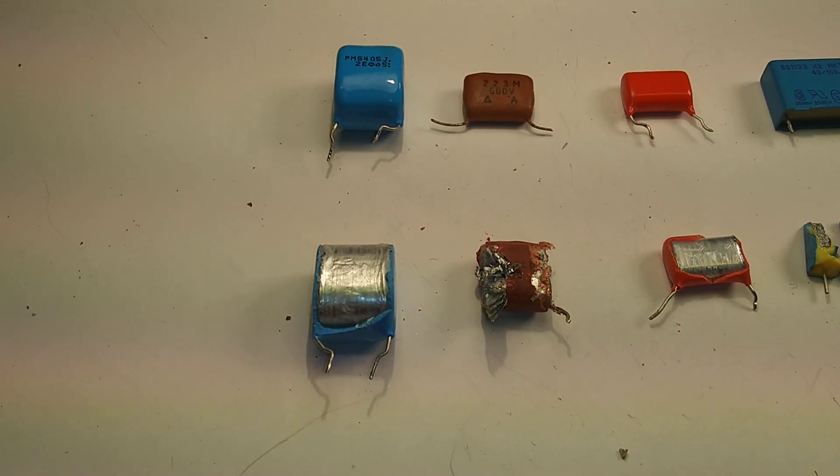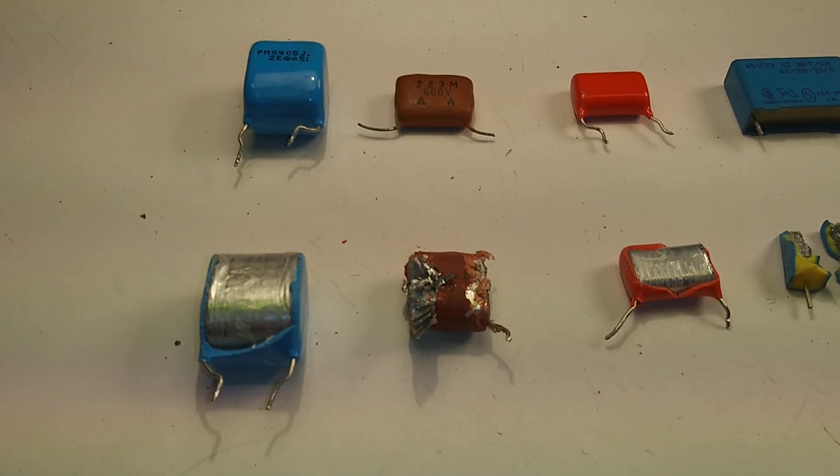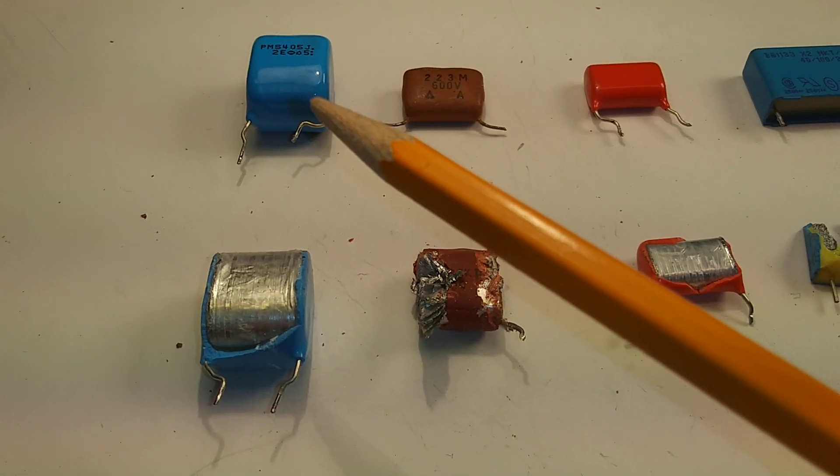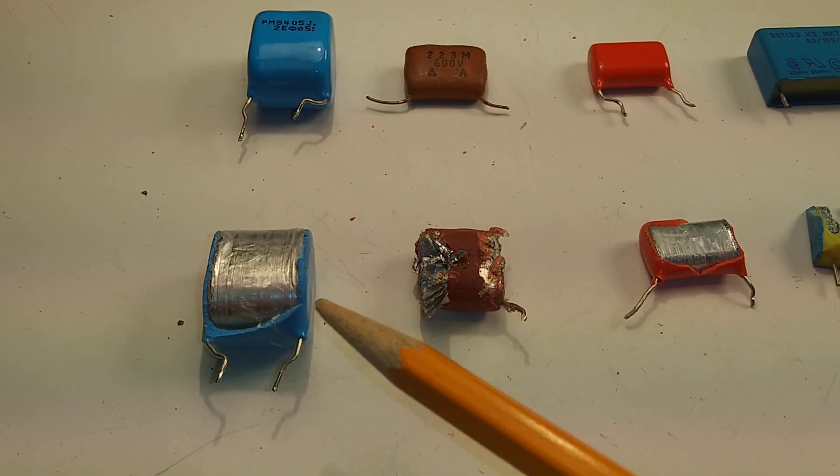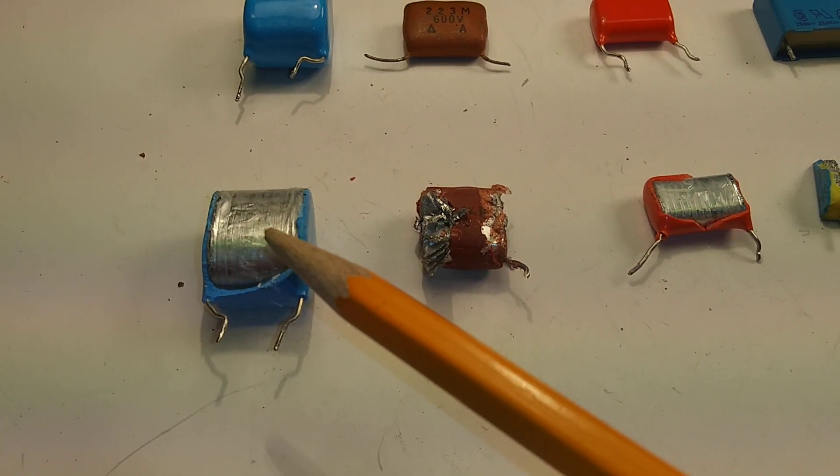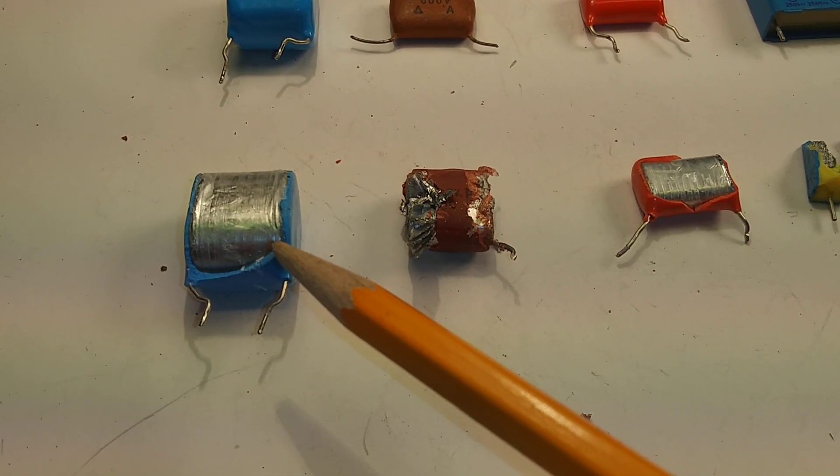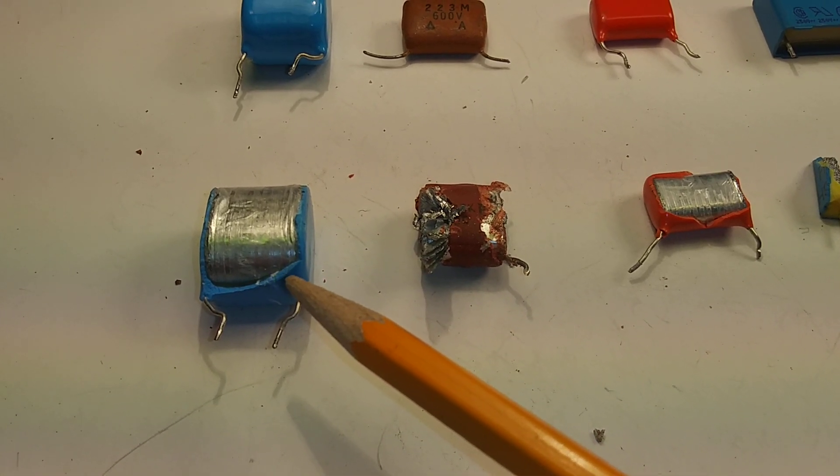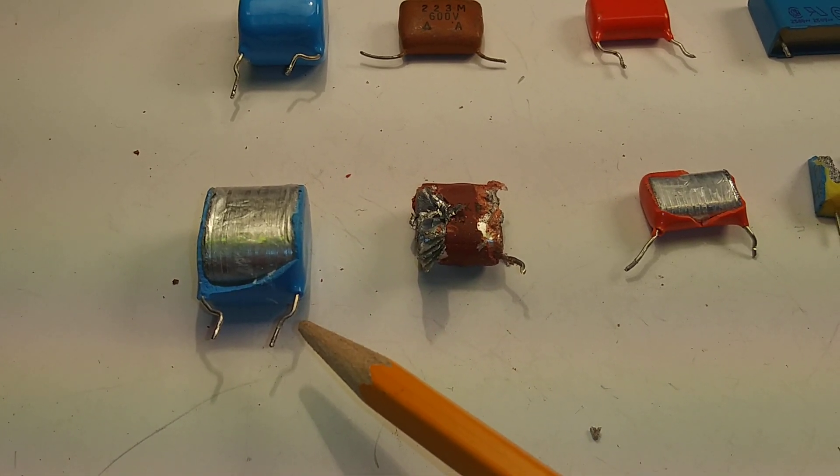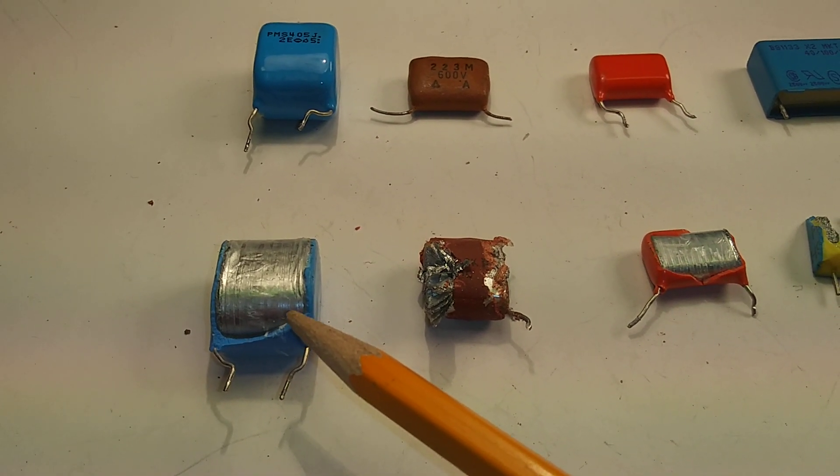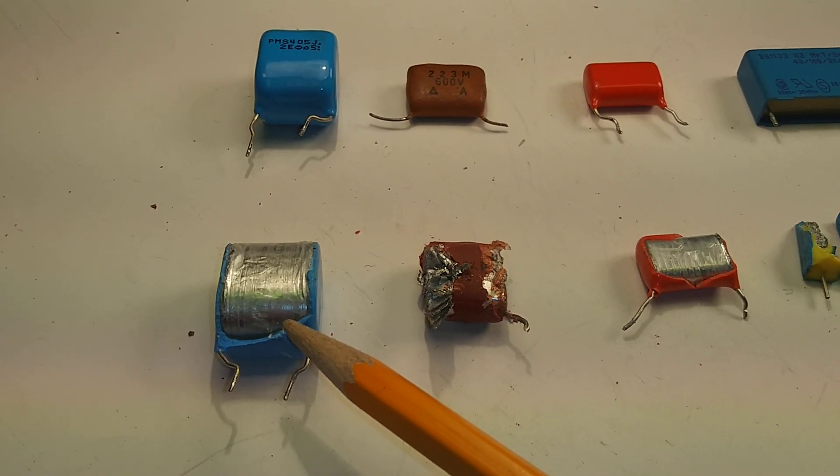So let's go through some of the capacitors that I have selected here for our video. These blue ones here, I see a lot of them in plasma TVs, especially. In fact that's where I got these ones. So I've cracked one open and as you can see there's just a roll of mylar and an insulator type of material, and then of course you've got the electrodes on each end. No, there's no silver inside of them.